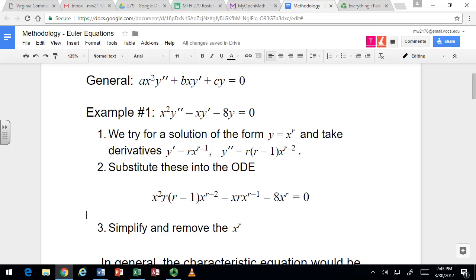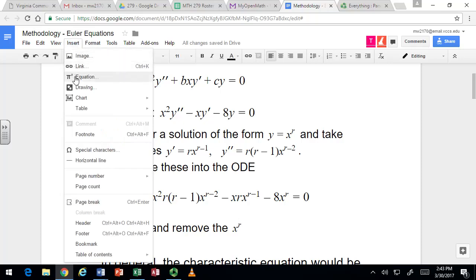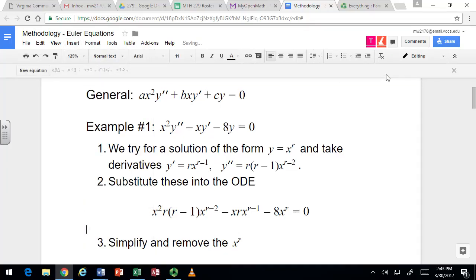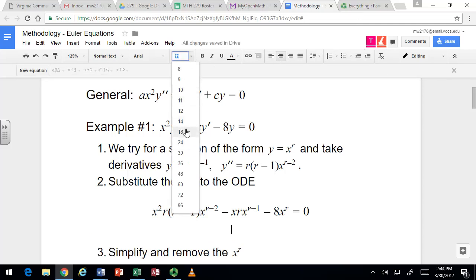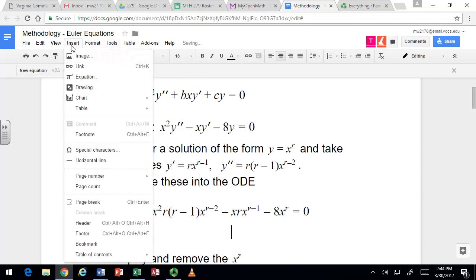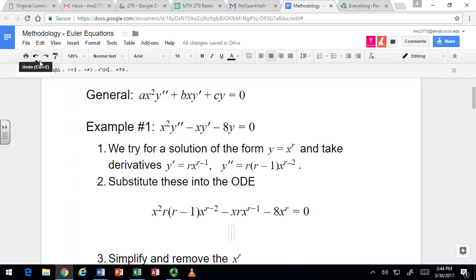You see how that works? Combining the x's using the rule for exponents and adding them. 2 plus r minus 2 is r. 1 plus r minus 1 is r. And so you're going to get... Let's see, we have r times r minus 1 x to the r minus r x to the r minus 8 x to the r.